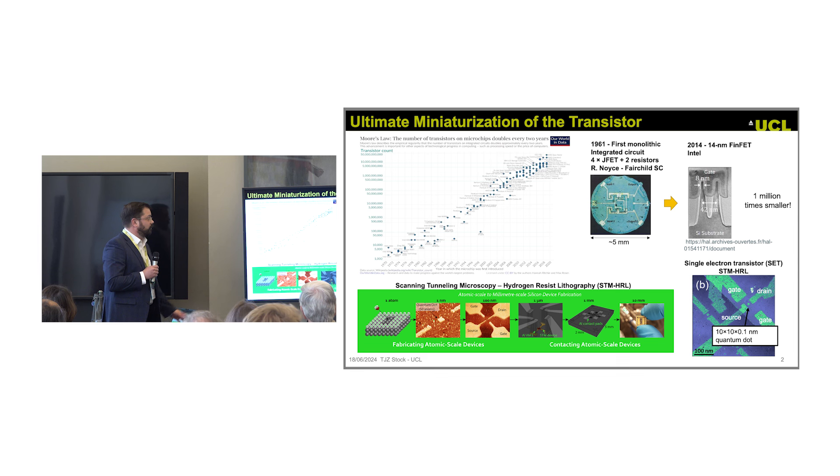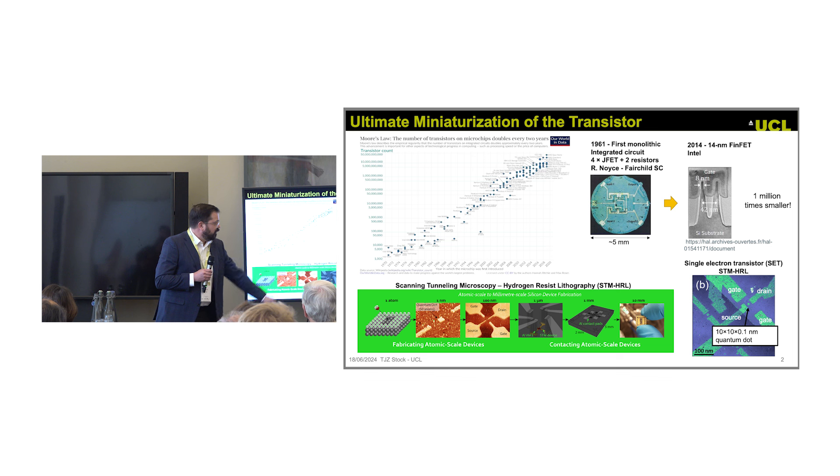What I'm going to tell you about is the technique where you can really make devices at the single atom level. This technique uses a scanning tunneling microscope to manipulate atoms on the surface of a silicon crystal. We control where dopants go, down to the single atom level. This is all done in the microscope in ultra-high vacuum, then we use standard microfabrication techniques to contact it.